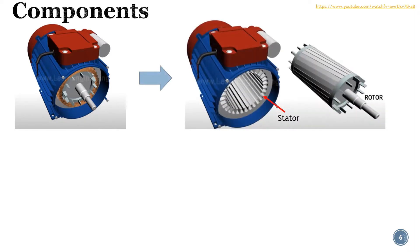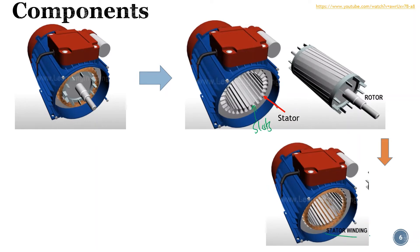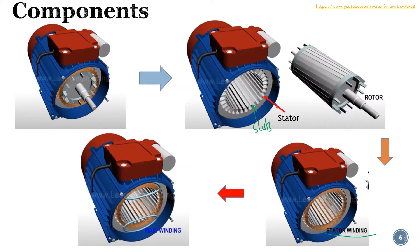The construction of the single phase induction motor is similar to the three phase induction motor. We have a stator based on a laminated core with slots for placement of the stator winding, and we have a rotor inside. The stator windings are supplied using what we call the main windings. When input voltage is applied to the stator windings, we get the stator magnetic field.